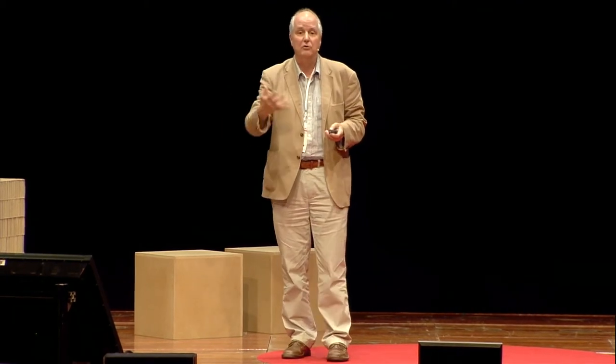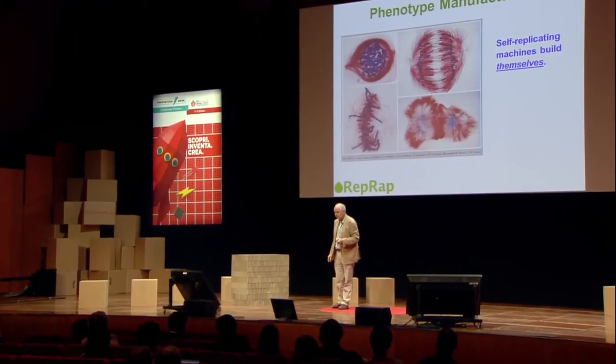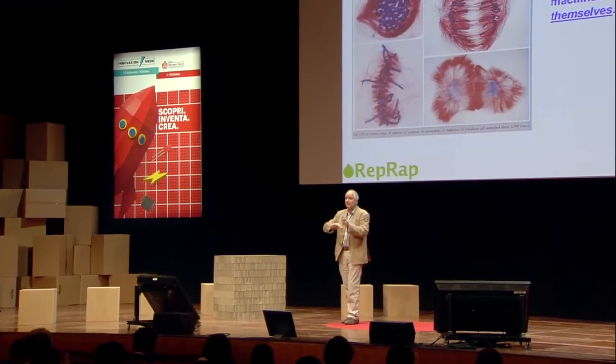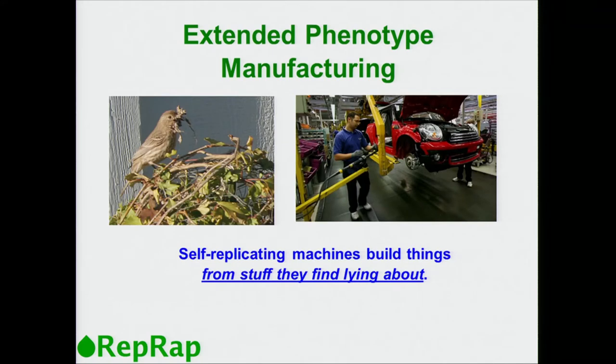We know how both of these work — we're taught at school. The phenotype is the shape or characteristics of a living organism: whether your eyes are brown, how tall you are — that is your phenotype. The color of the leaves of a tree, whether they're red or green — that's the tree's phenotype. And we know how phenotype manufacturing happens, the big blue part of that pie chart: it's by cells dividing, by self-replicating machines building themselves.